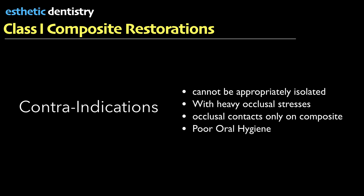Contraindications of composite restoration include: when the operating site cannot be properly isolated — isolation is the most important part of any composite restoration — when there is heavy occlusal stress in patients with parafunctional habits, when all occlusal contacts are only in composite, and poor oral hygiene is also a contraindication.